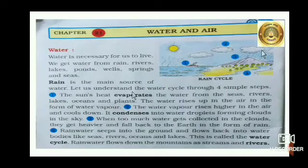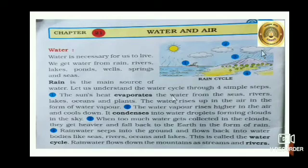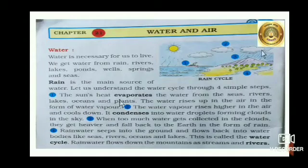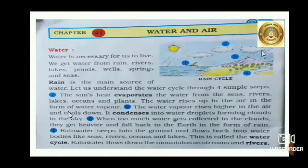Let us understand the water cycle through four simple steps. First, the sun's heat evaporates the water from the seas, rivers, lakes, oceans and plants. The water rises up in the air in the form of water vapors.